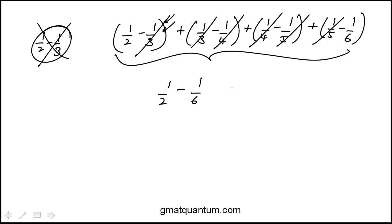You'd be left with half minus a sixth, which is going to be three-sixths minus one-sixth or two-sixths or one-third, and that's answer choice C.